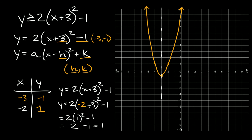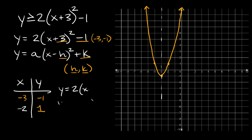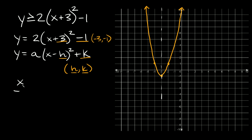Now that it's graphed, the next step is figuring out if this parabola is dashed or solid. Looking at the original inequality, you can see it has the equal-to symbol — greater than or equal to — so that means our parabola has to be solid. So we leave it just like that.